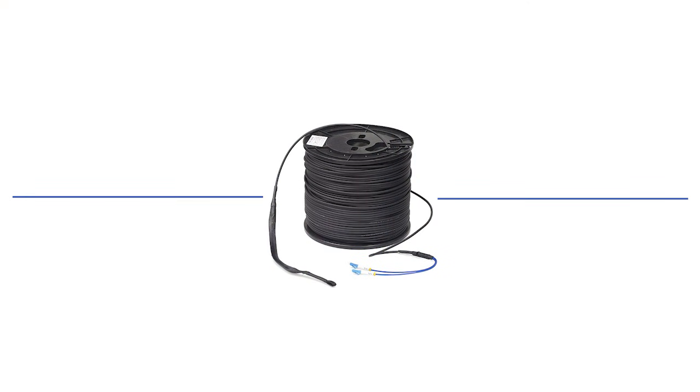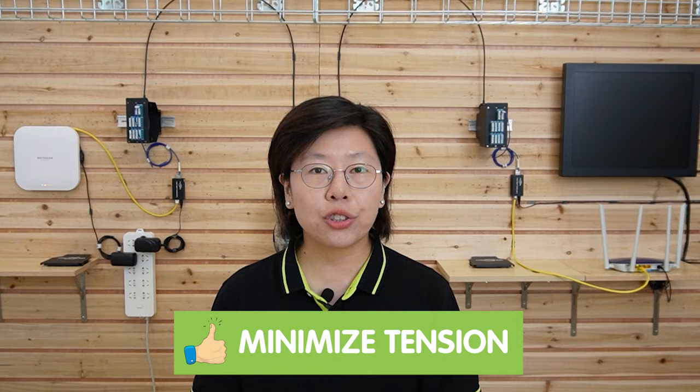Pulling and installing fiber optic cable requires precision and care to avoid damage and signal loss. For extremely long distances, it is often more efficient to pull the cable from the middle toward both ends — this minimizes tension on the cables and reduces the risk of damage. During installation, it is advisable to have a two-person team: one person pulls the cable while the other carefully guides and releases it. After installation, it is essential to secure the cable properly, especially in racks or conduits.